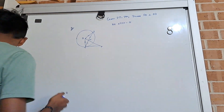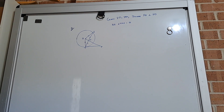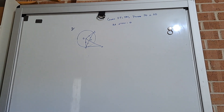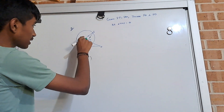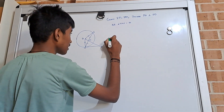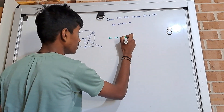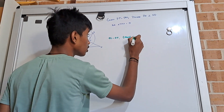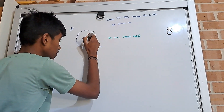First let's analyze the diagram and annotate anything that we know. In this diagram we're given that these two sides are equal, so we can state that OS is equal to OT, and the reason being that these are equal radii — equal radii of the same circle.